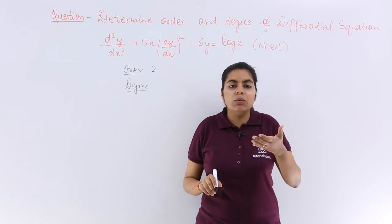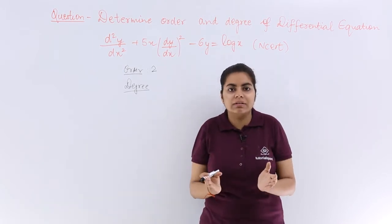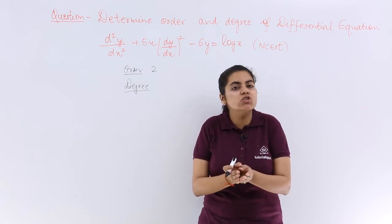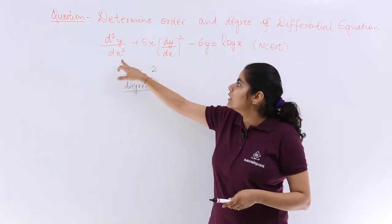What about the degree? When you know the order, its power is basically the degree, and there should be no square roots or radicals. The order is 2.